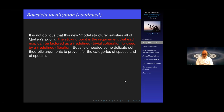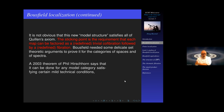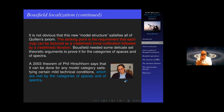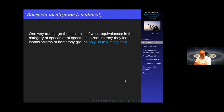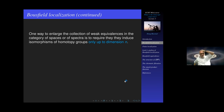Bousfield needed some delicate set-theoretic arguments to prove this can be done in the categories of spaces and spectra. A few years later, in 2003, Phil Hirschhorn proved a theorem that says you can do this in any model category satisfying certain mild technical conditions, and those conditions are met by the categories of spaces and spectra. One way to enlarge the collection of weak equivalences: in either spaces or spectra, the usual definition of a weak equivalence is that it induces an isomorphism in all homotopy groups.